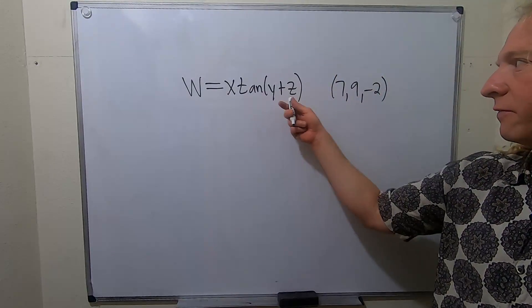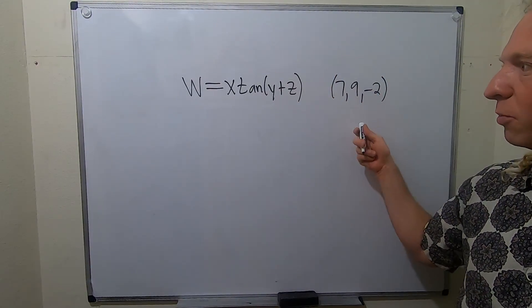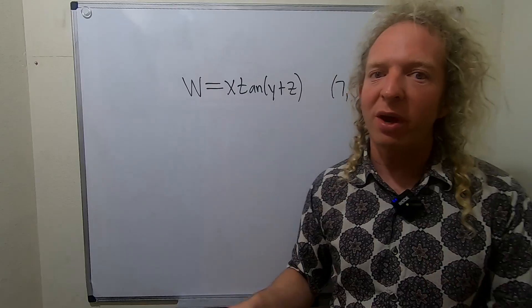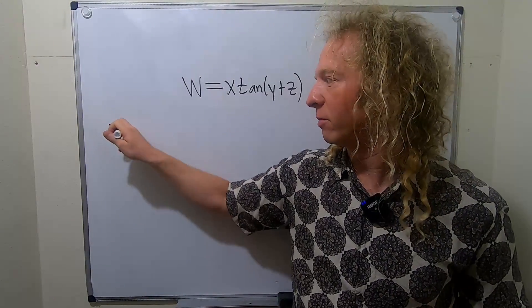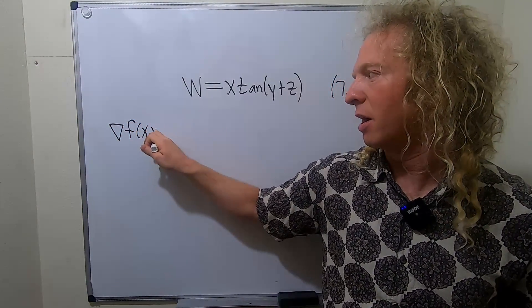In this video, we're going to find the gradient of this function at this ordered triple. So recall that the gradient of a function of three variables, say f of x, y, z,